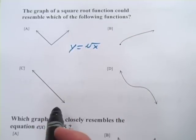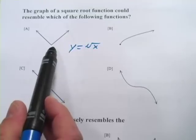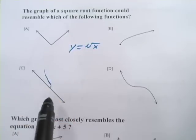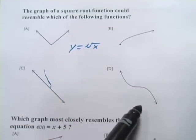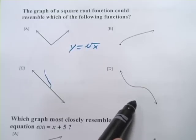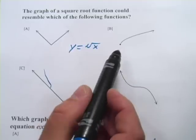And you should be able to tell that this guy right here is an absolute value. This one is just a linear function. This looks like maybe a cubic function that's been flipped around or something, and the square root is this one.